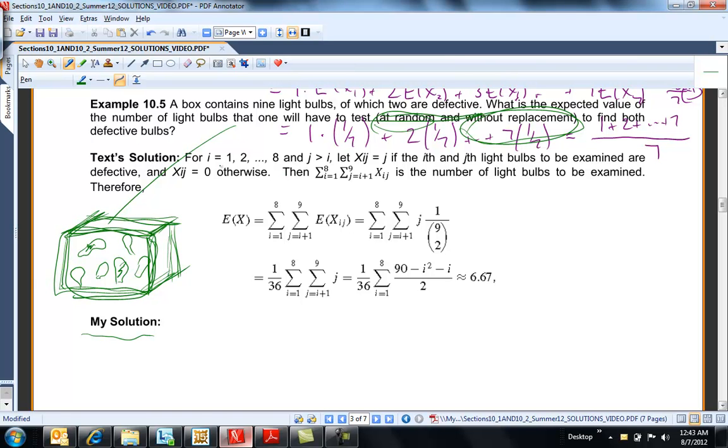But they're going to do it this way. Okay, so let i equals 1 through 8 and j is going to be bigger than i. So i and j are just indexing variables. The random variable X_ij equals j if the ith and jth light bulbs are defective. So in other words, like if the first and fifth are defective, then X_15 is going to be equal to 5. That means I've had to test 5 bulbs. Right? So you're going to start, you're going to test 1, 2, 3. The most you could have to test is all 9 of them. So for example, if you found it on the 2nd and the 7th, then X_27 is equal to 7. That means you had to check 7 before you found both defective.